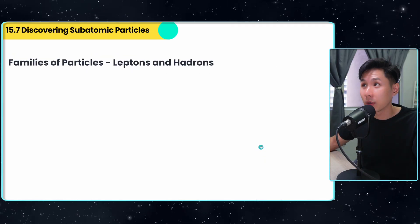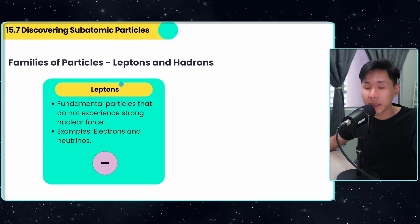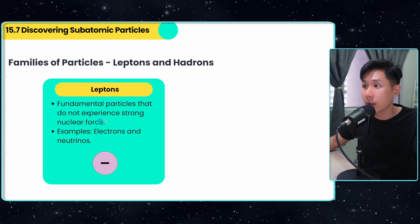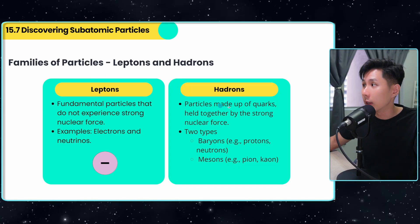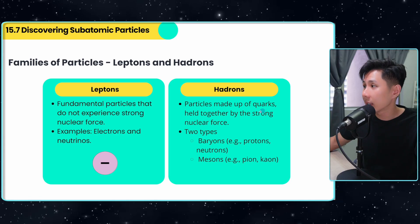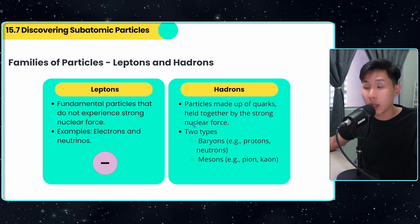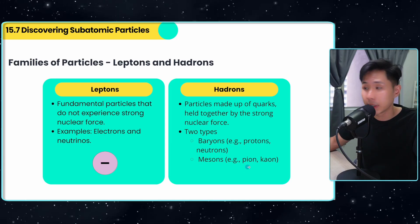Families of particles - this is something that scientists came up with. There are two types of particles: leptons. These are the fundamental particles that do not experience strong nuclear force, like electrons and neutrinos. Whereas hadrons, which is something we'll dive deeper into, are made up of quarks, held together by strong nuclear forces, like baryons, which include protons and neutrons, and mesons, pions and kaons.